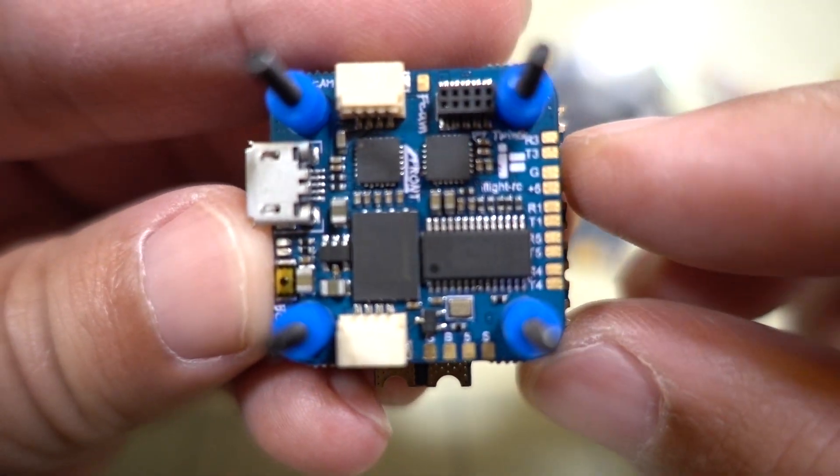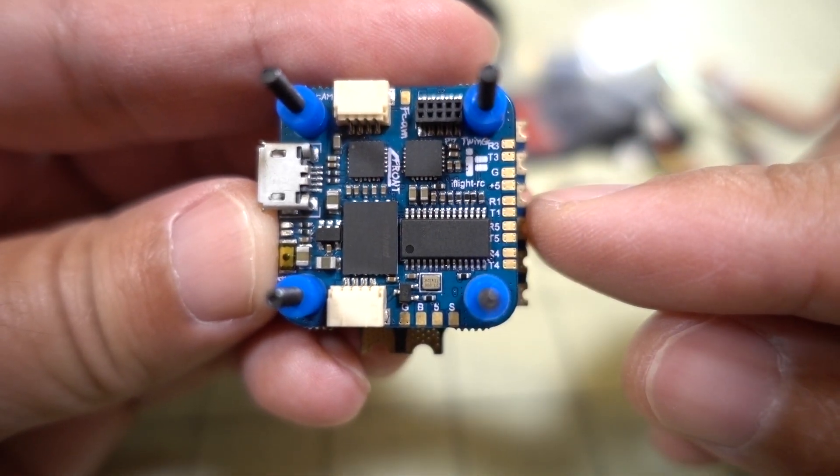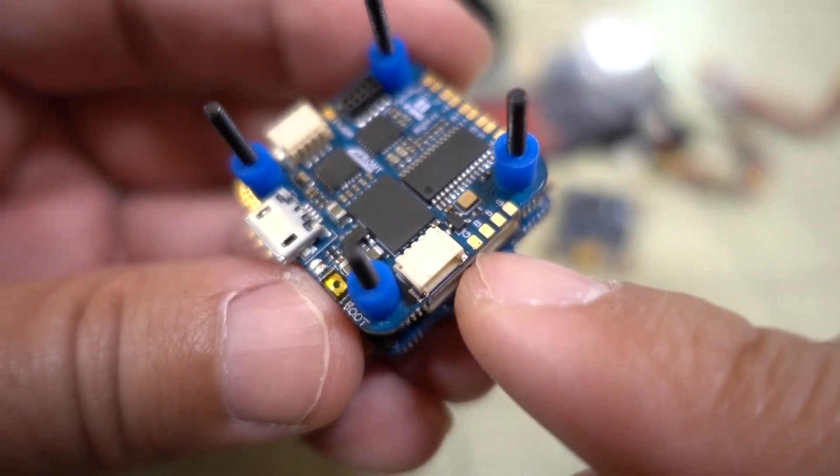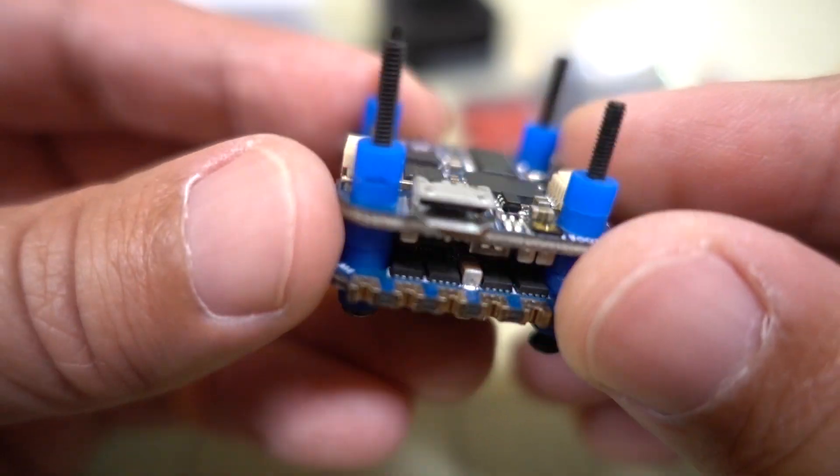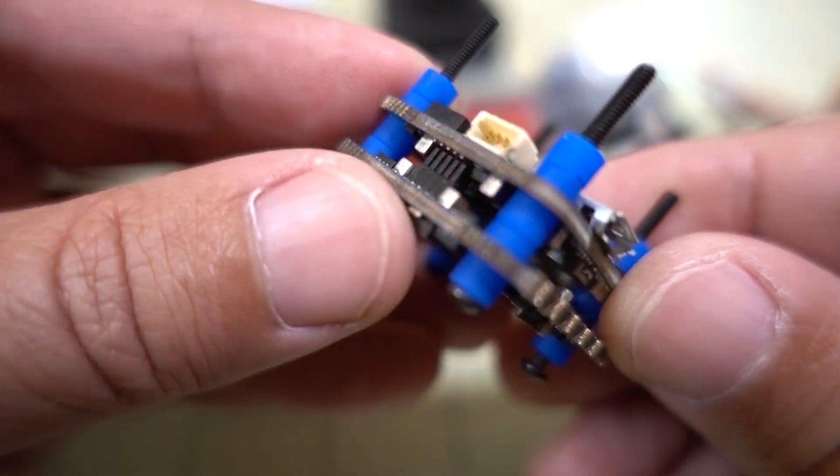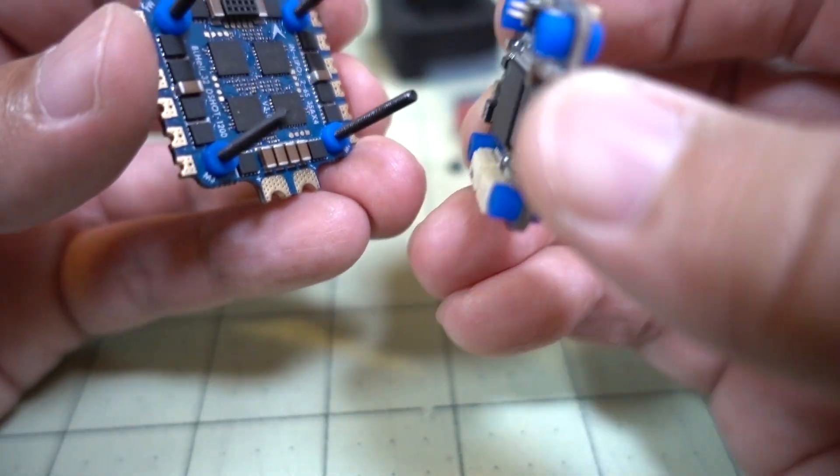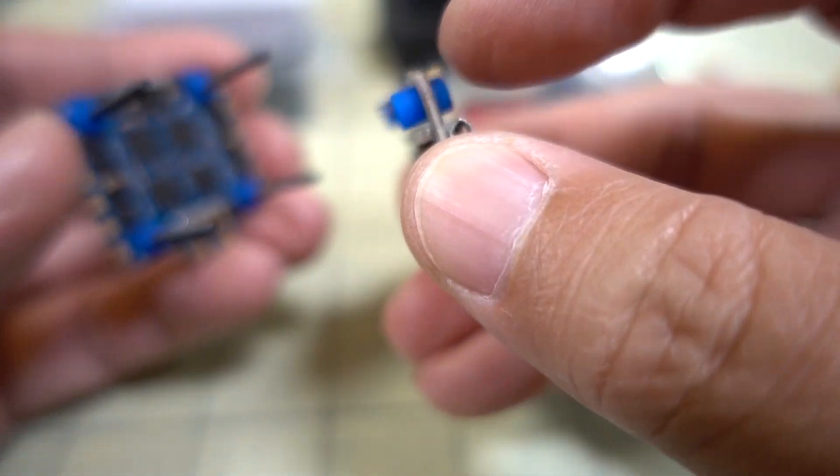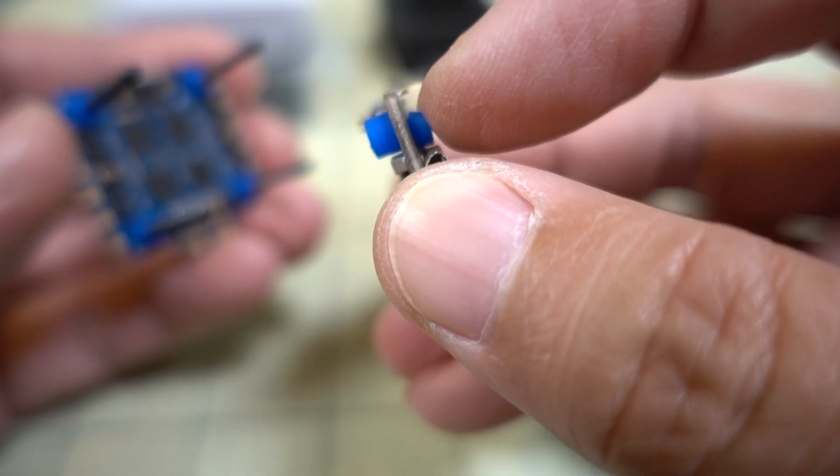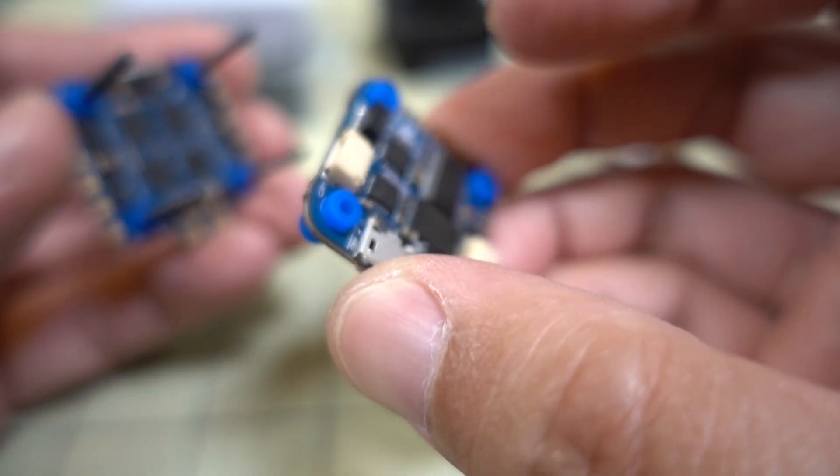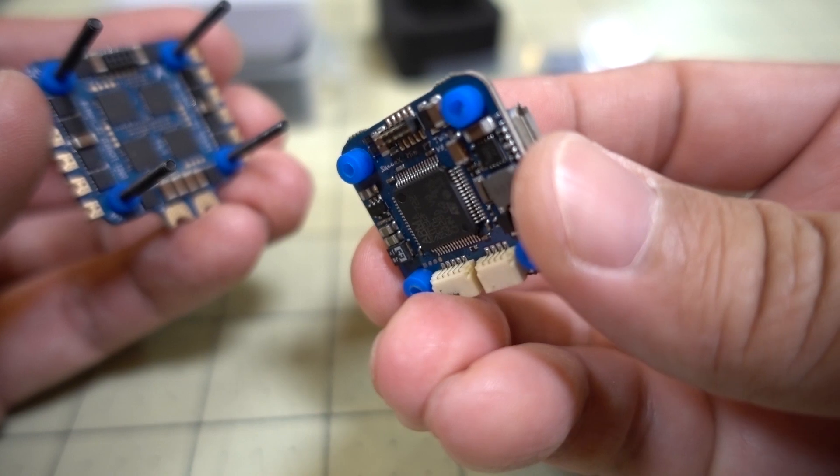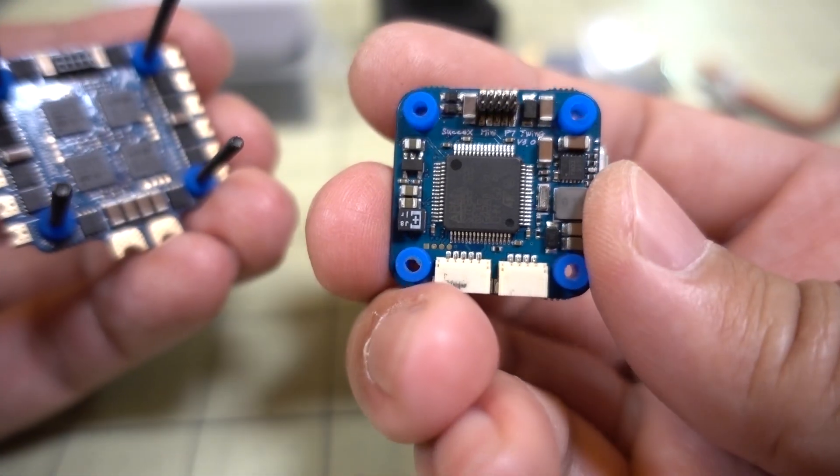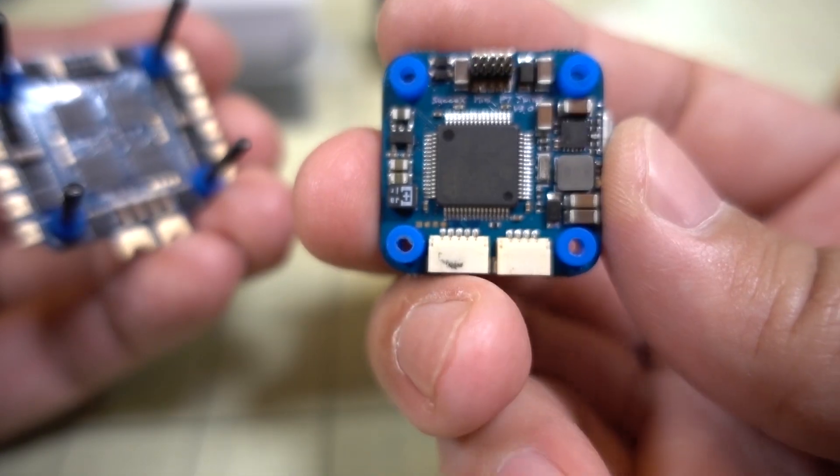All nice solder pads here on the side for your different UARTs. I bet this is either going to be 5 or 6 UARTs. And boot loader button there, USB port there. So it looks like this is actually a grommet built into the flight controller. So it's not actually spaced around the top and the bottom. It's actually into the hole there. So we'll take a look at the bottom of the flight controller.